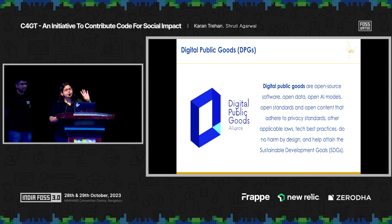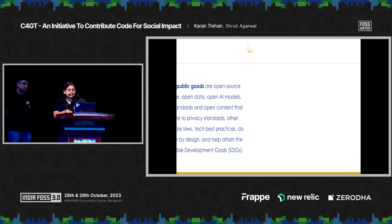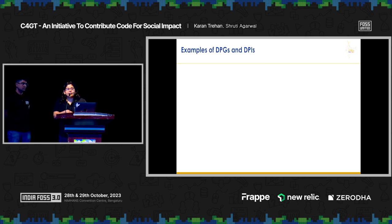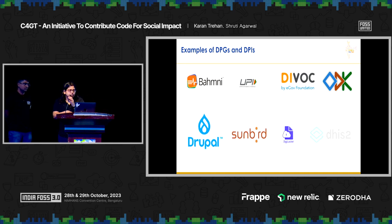So digital public goods can be open source software, open data, open AI models, or an open AI standard that has helped attain the sustainable development goals. Some examples of DPGs and DPIs — and many of you have likely used these — include Bhamini, UPI, Divock, ODK, Drupal, Sunbird, DigiLocker, and many more.